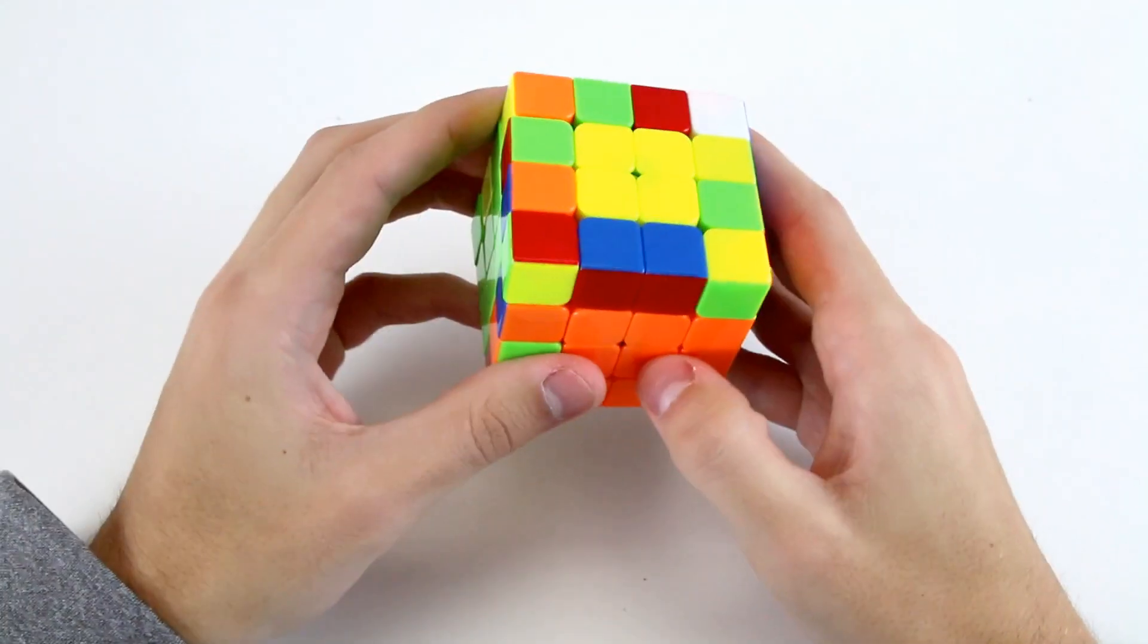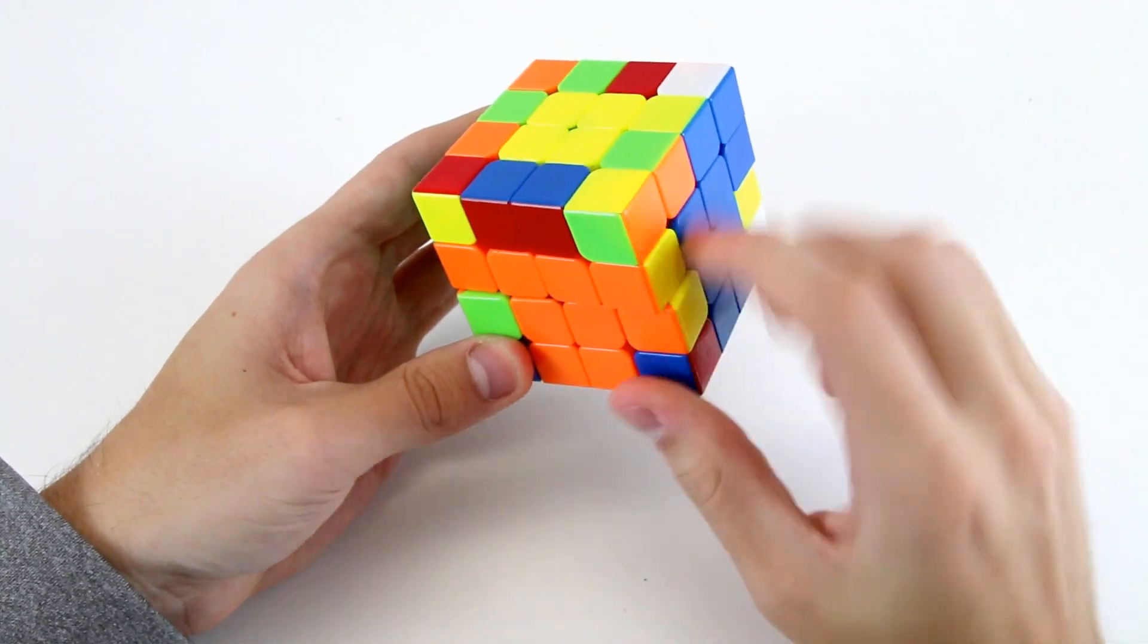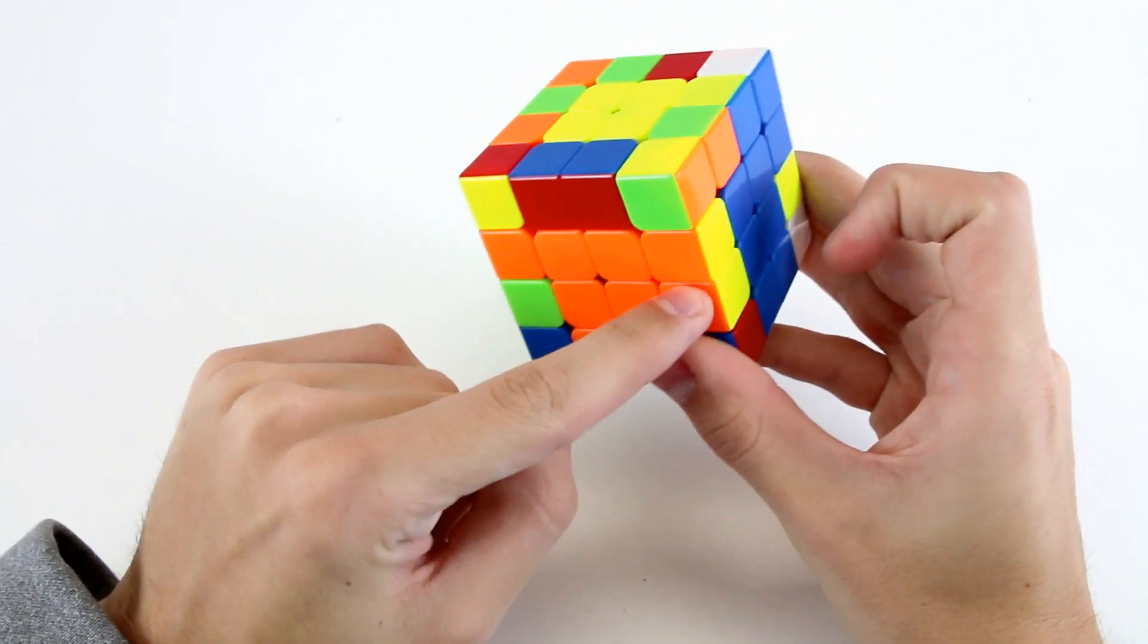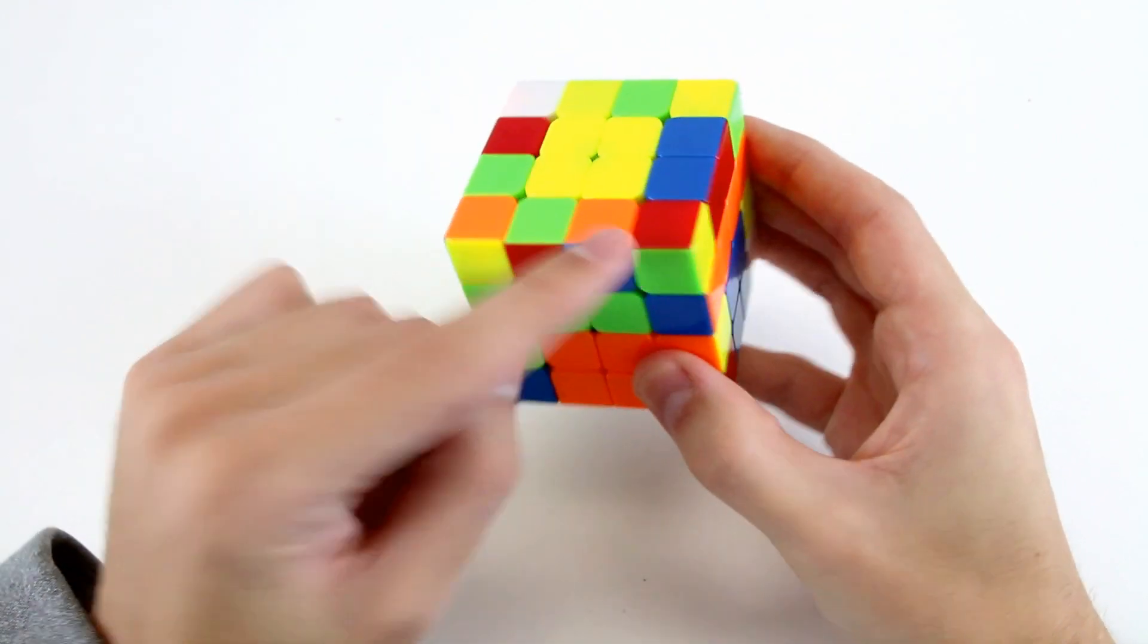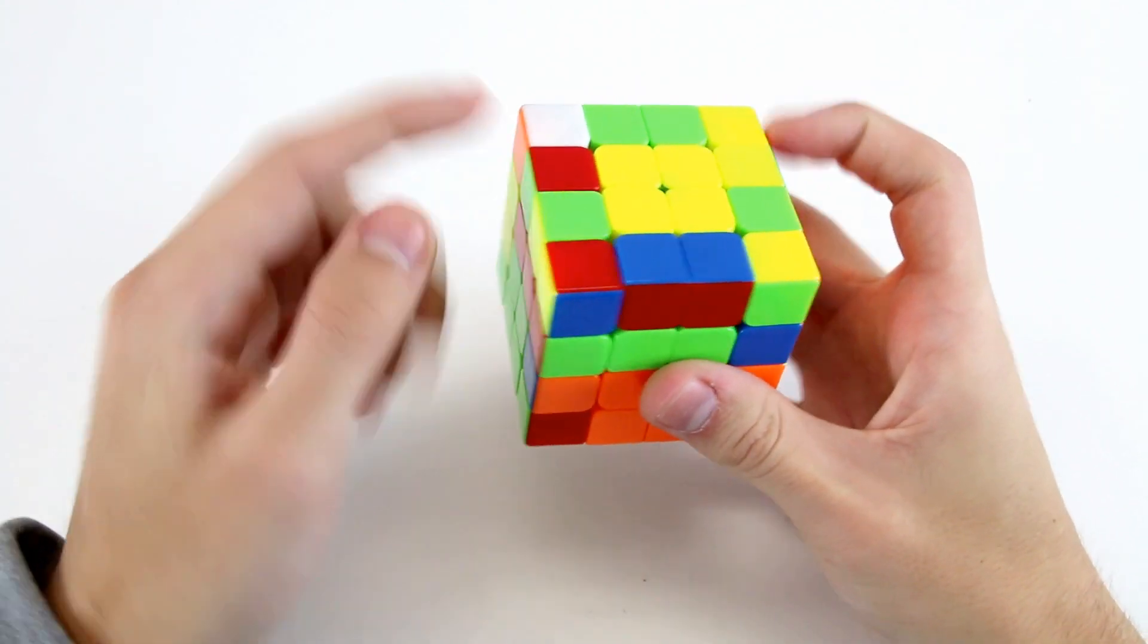So again, getting quite lucky with some of these edge cases. I'm going to do a wide U prime, so that I don't... wide U prime, insert in these two slots, and then when I slice back, this one will stay solved. So wide U prime, blue and orange, blue and orange, red and green, red and green.